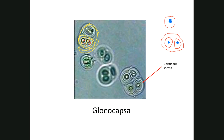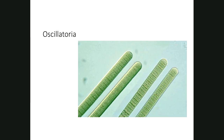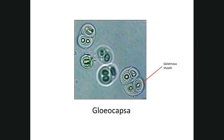Contrast this to colonial Nostoc, Anabaena, and Oscillatoria. These cells are in direct contact with each other, while you don't get that with Gloeocapsa.